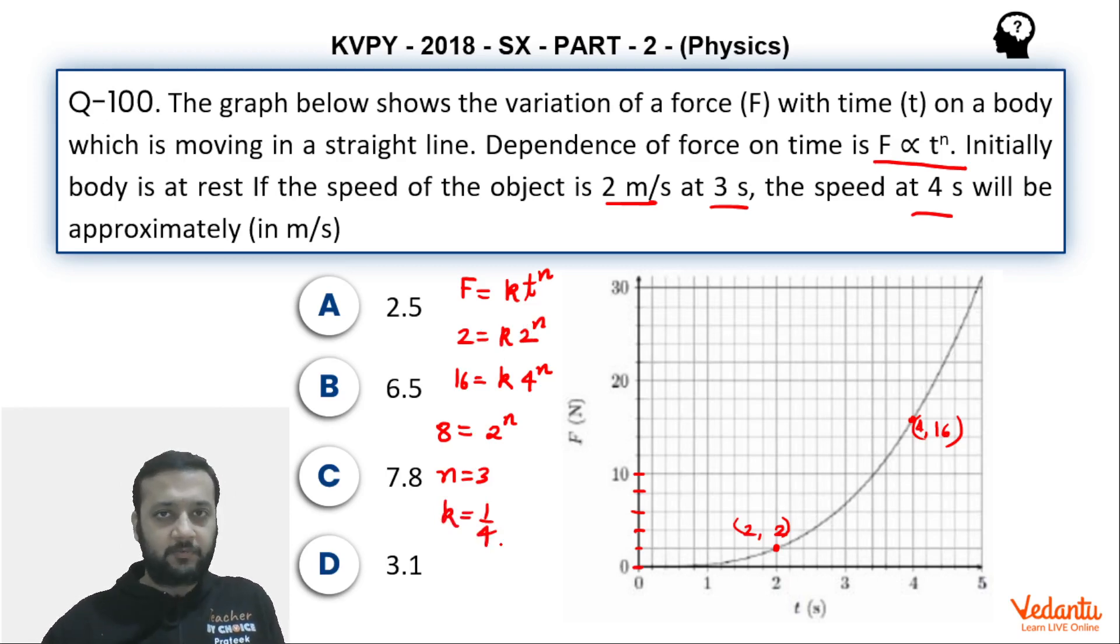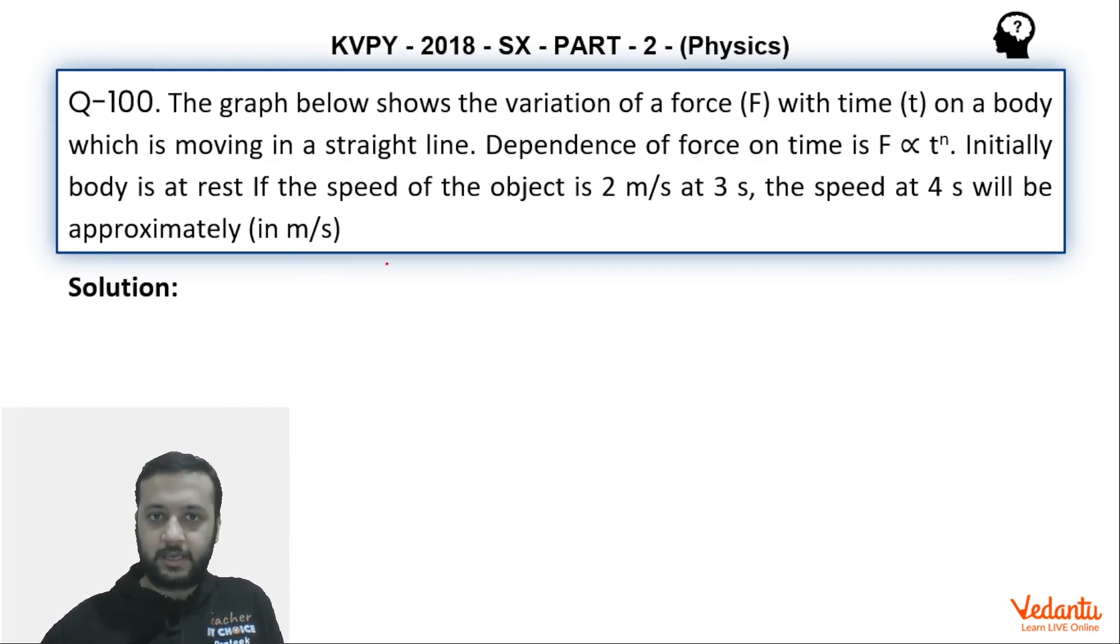Eventually, with the help of graph, we have found the force function. Hence, we can say that force is nothing but t to the power 3 upon 4. This is the force function. Now, force can be written as mass into acceleration. Or you can also use impulse momentum equation, which is impulse integral F dt equals change in momentum. So both will give you the same result. So let's write mass into acceleration equals t cubed by 4.